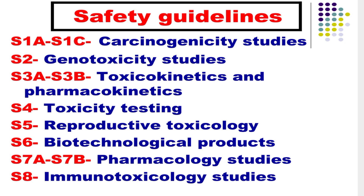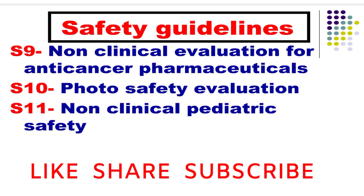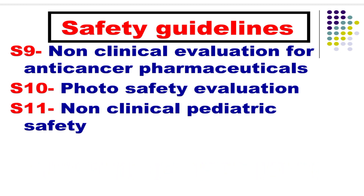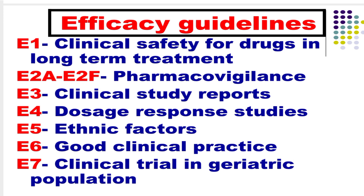Next are the safety guidelines. The safety guidelines are divided into the following types: S1A to S1C for carcinogenicity studies; S2 for genotoxicity studies; S3A to S3B for toxicokinetics and pharmacokinetics; S4 for toxicity testing; S5 for reproductive toxicology; S6 for biotechnological products; S7A to S7B for pharmacology studies; S8 for immunotoxicology studies; S9 for non-clinical evaluation for anti-cancer pharmaceuticals; S10 for photosafety evaluation; and S11 for non-clinical pediatric safety.